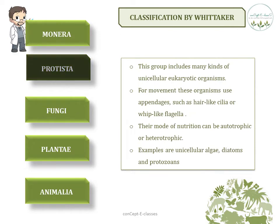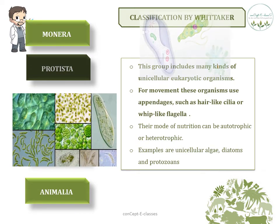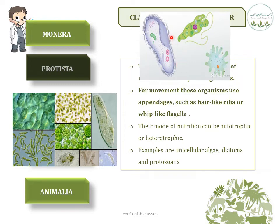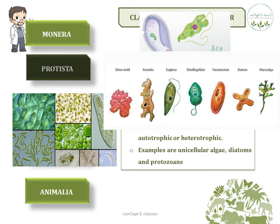The second kingdom is Protista. These organisms have a well-defined nucleus and membrane-bound organelles, making them eukaryotic. They are unicellular. For locomotion, these organisms use appendages like hair-like cilia or a whip-like flagella. Their mode of nutrition can be either autotrophic or heterotrophic. Examples are unicellular algae, diatoms, and protozoans.